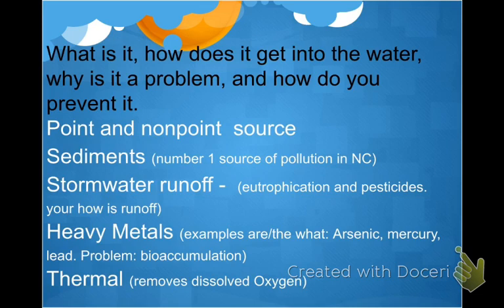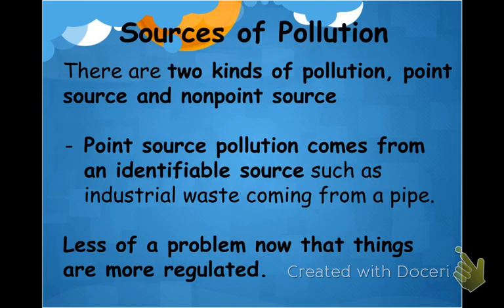We're going to look at different types of pollution and the main pollutants in North Carolina, and why they are a problem. The topics we'll cover are point and non-point source pollution, sediments, stormwater runoff, heavy metals, and thermal pollution. There are two types of pollution: point source and non-point source.